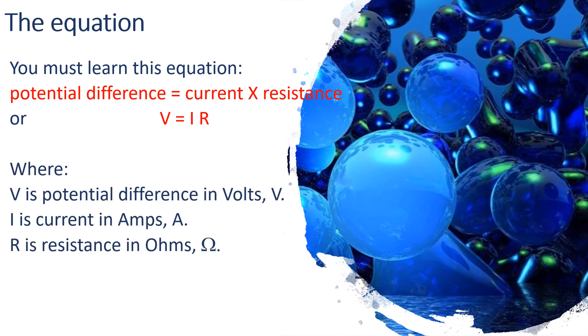You must be able to rearrange that. If you want to rearrange it, then I would be V over R, and R would be V over I. So remembering V is potential difference in volts, I is in amps, and R is resistance in ohms.